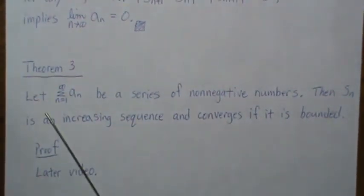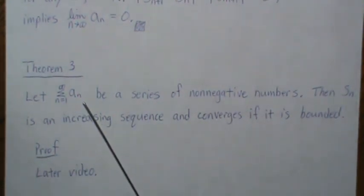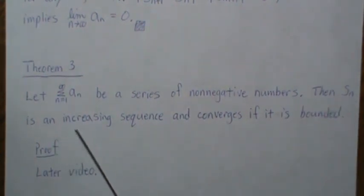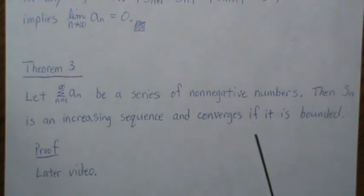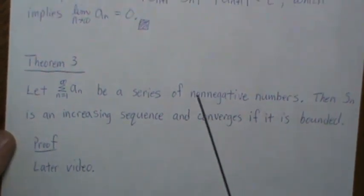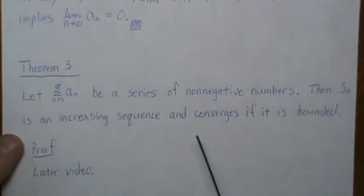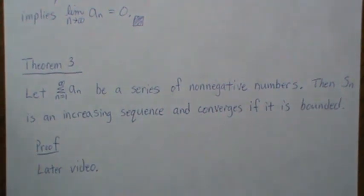So one more theorem, which we'll prove later, let this series be of non-negative numbers. So each AN is zero or positive. Then the partial sum is an increasing sequence and converges if it's bounded and diverges otherwise. And then we'll prove this later. But in a couple videos down the road, we'll quote this theorem. And I want to point back to it.